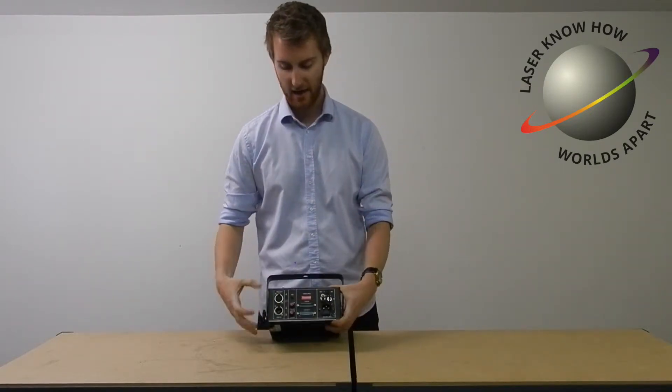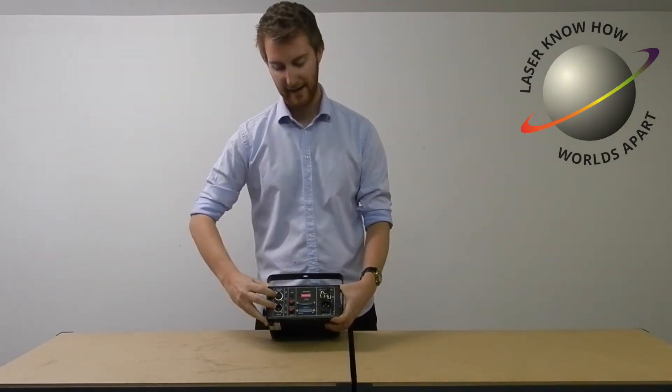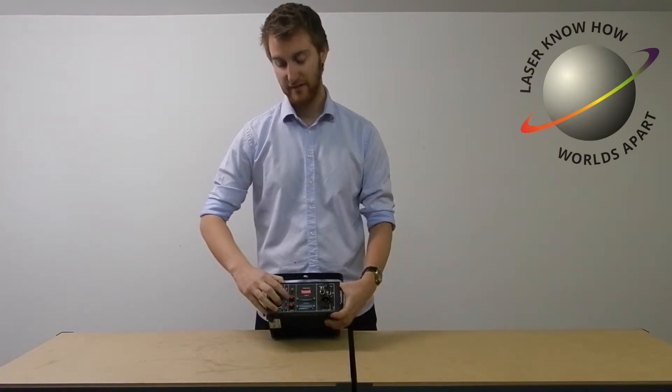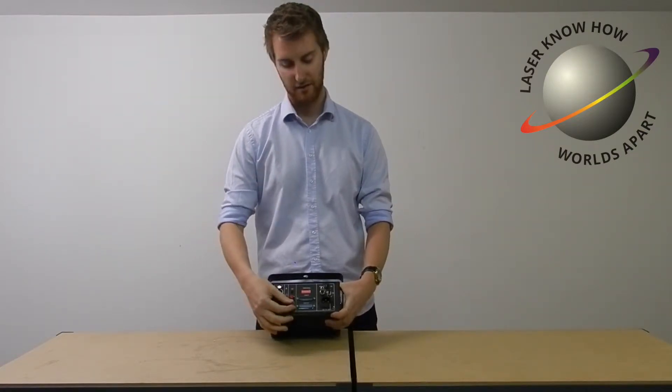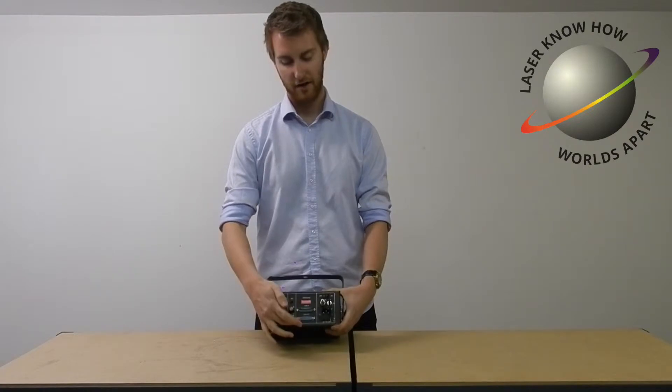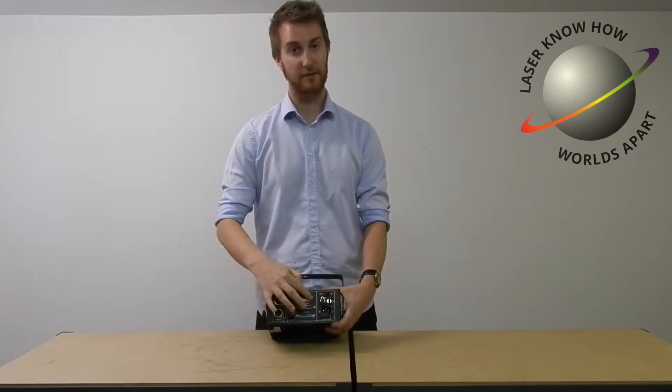You can see that here on the left hand side we've got DMX in and out. Then we move across and we've got the microphone for the sound active mode and we've got the zoom. Then in the middle we've got ILDA in and out and the dip switches.